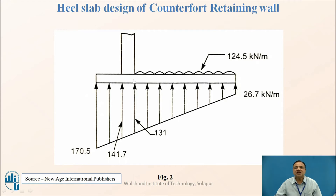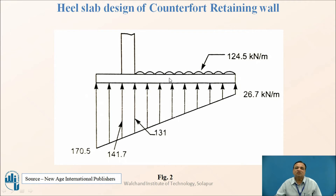The heel slab extends from the inner face of the stem to the end under the backfill. The weight of the soil on it gives a UDL of 124.5 kN/m. The upward soil pressure is trapezoidal and varies due to the horizontal lateral force acting on the stem. You have to design the heel slab for the difference between these two pressures — the net pressure is maximum downward at the edge.